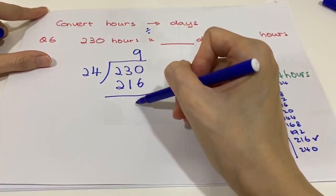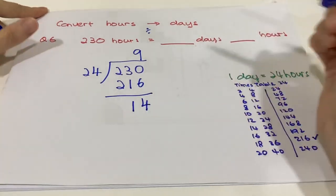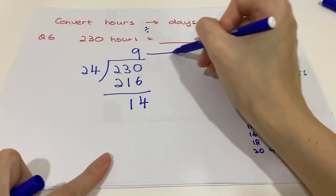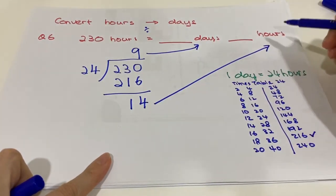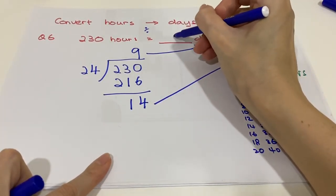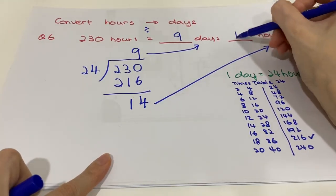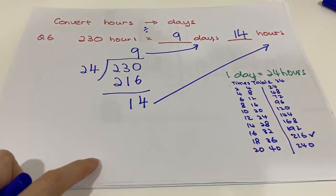This answer is for the days and this answer is for the hours, so 230 hours will be equal to 9 days and 14 hours. Thank you.